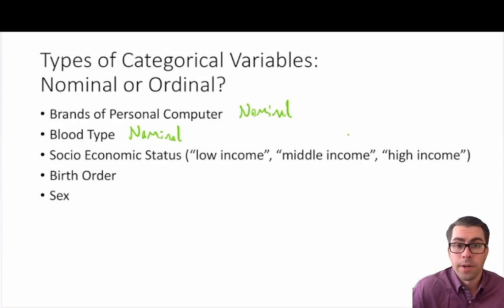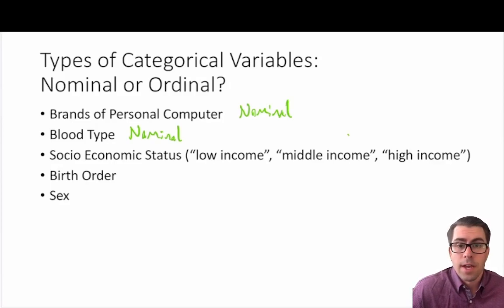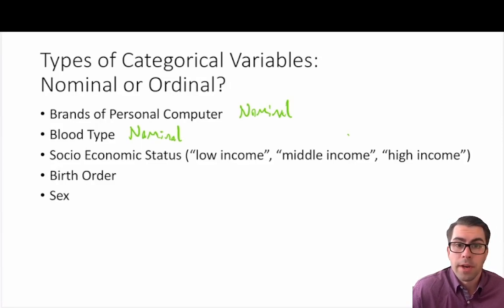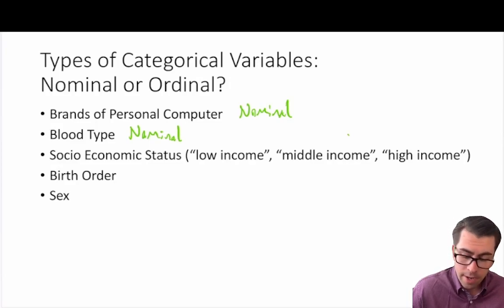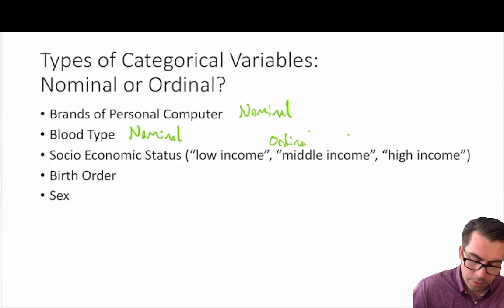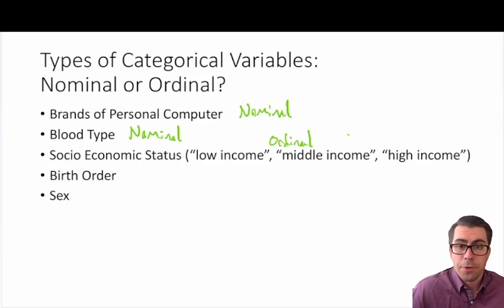What about socioeconomic status — low income, middle income, high income? If you've ever completed a survey for a census or research purposes you've likely answered this. In this case it does tell us information about order: you might order it as high income being one, middle income two, low income three — or logically as low income one, middle income two, high income three. Either way, this tells us something about the order of this variable, so we label this as an ordinal variable.